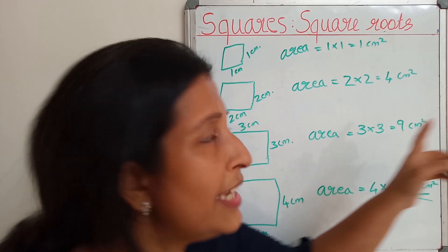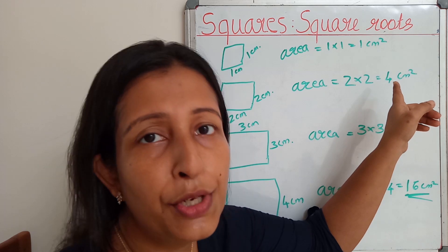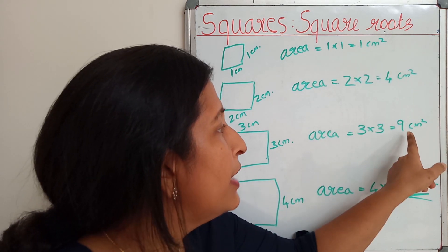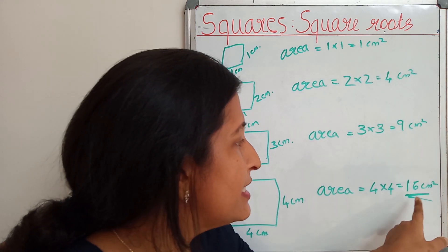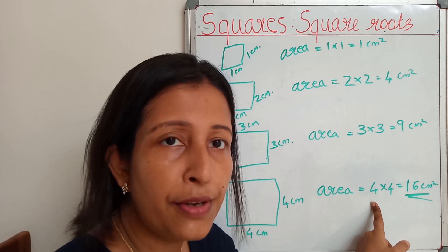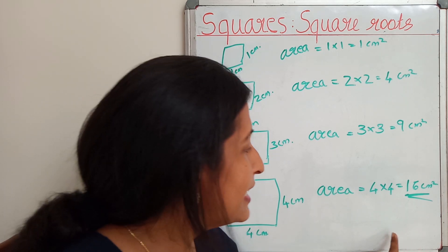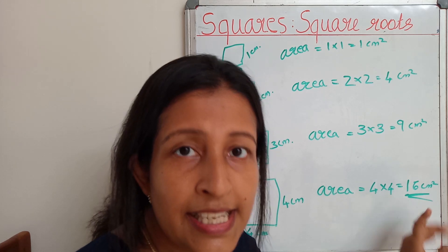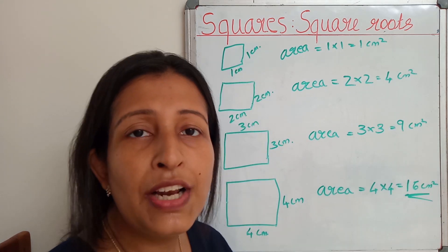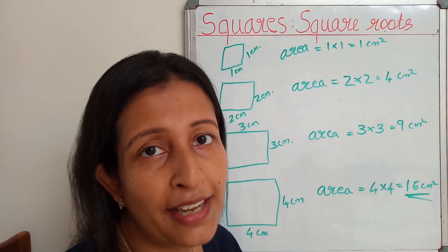In this chapter we are going to study the numbers 1, 4, 9, 16, then 5 x 5 = 25, 6 x 6 = 36. These numbers we will call square numbers.